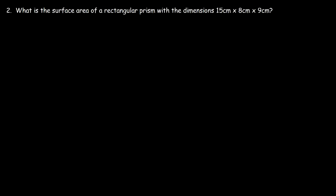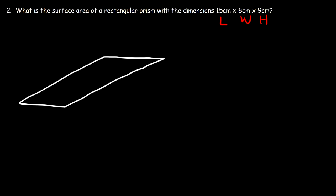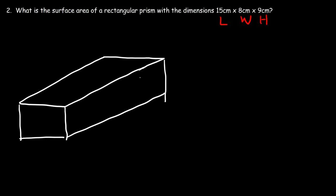Number 2: What is the surface area of a rectangular prism with the dimensions 15 cm by 8 cm by 9 cm? So let's say this is the length, this is the width, and this is the height. Let's begin by drawing a picture, just like we did before — it doesn't have to be perfect, just a simple rough sketch.